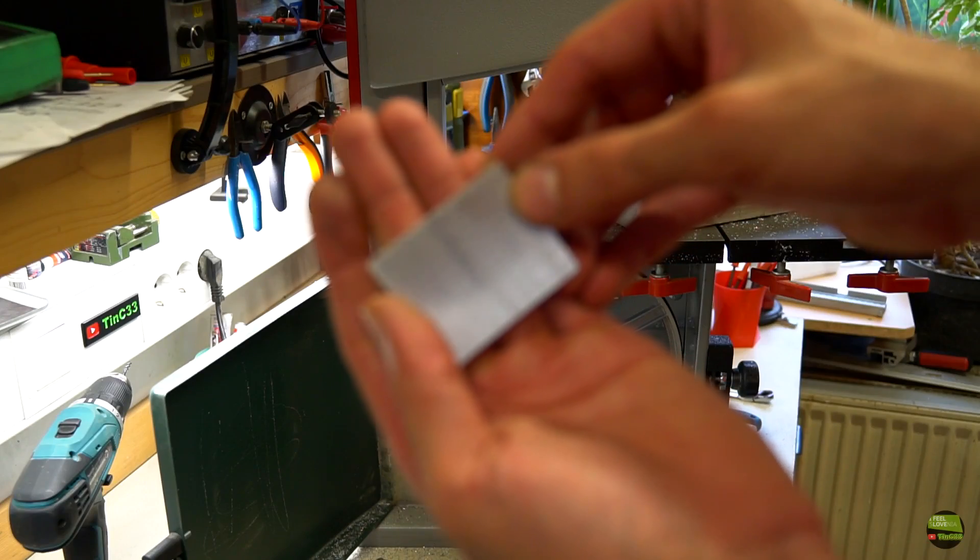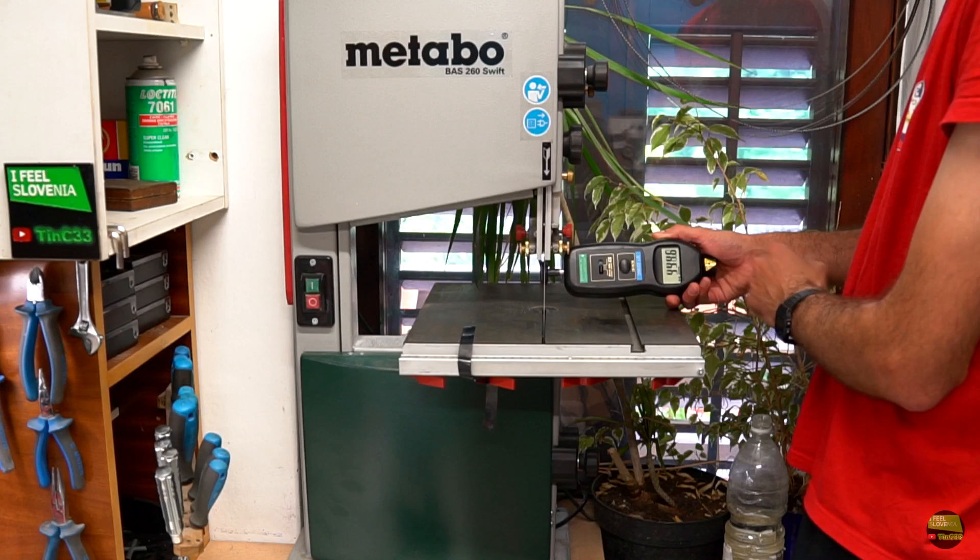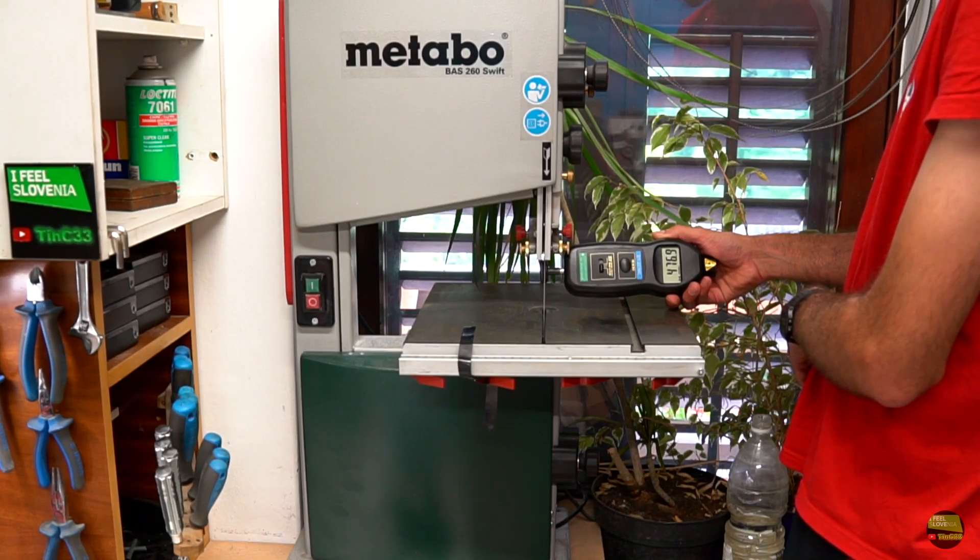Before the modification, big parts like that became hot, grabbed the blade and started vibrating. Speed of the saw is now about 470 meters per minute, which is still far too much. But the difference is already huge.